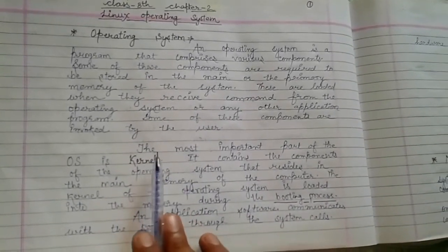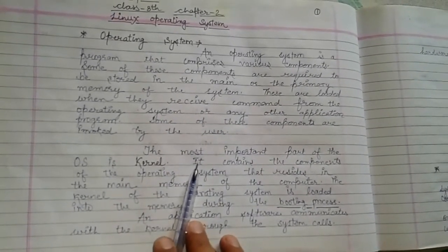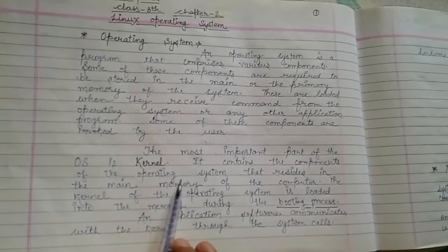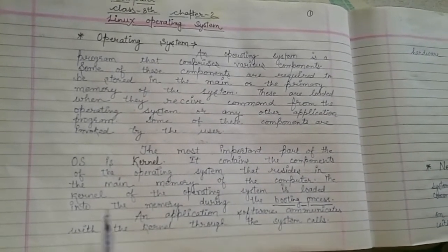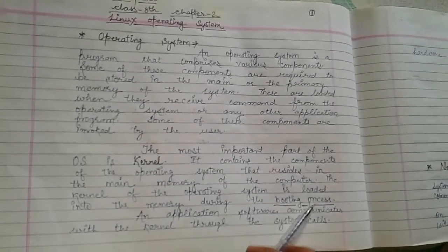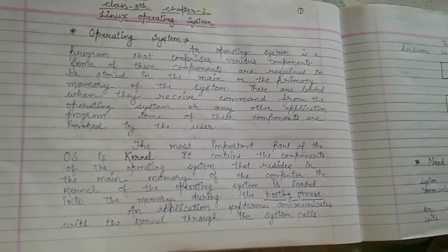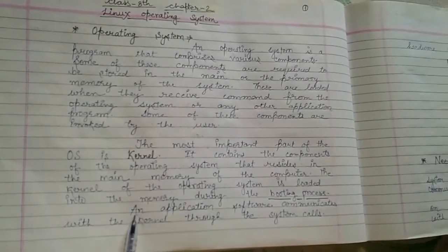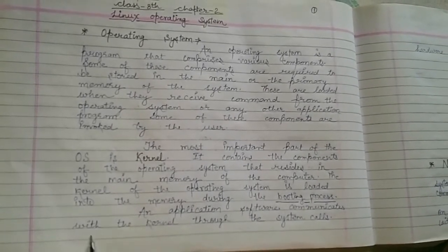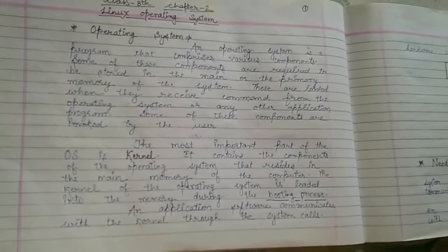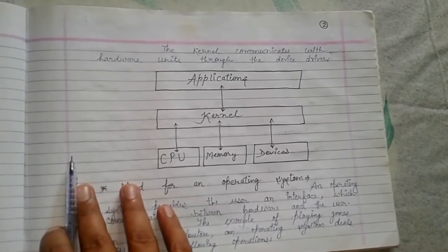The second topic is the kernel. The most important part of an operating system is the kernel. It contains the components of the operating system that reside in the main memory of the computer. The kernel is loaded into memory during the booting process — that is, when we start the CPU and it takes time to reach the desktop. An application software communicates with the kernel through system calls.